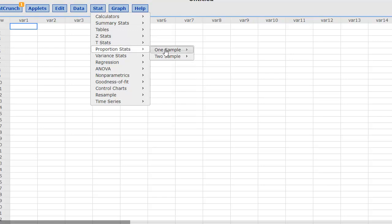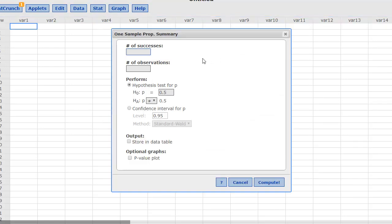We have a proportion test, one sample, and we have the summary. We don't have the actual data. So in this case, our number of successes was 19, our number of observations was 420. And then we had it was 5%, let me change that to 0.05.